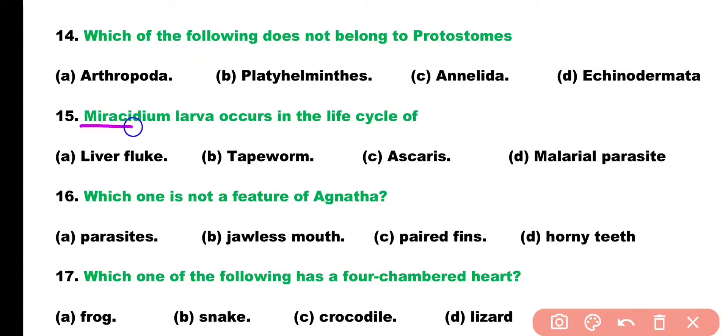Question number 15. Miracidium larva occurs in the life cycle of: liver fluke, tapeworm, Ascaris, or Malarial Parasite? Correct answer is Option A. Miracidium larva is a free swimming larva that is present in the life cycle of liver fluke.